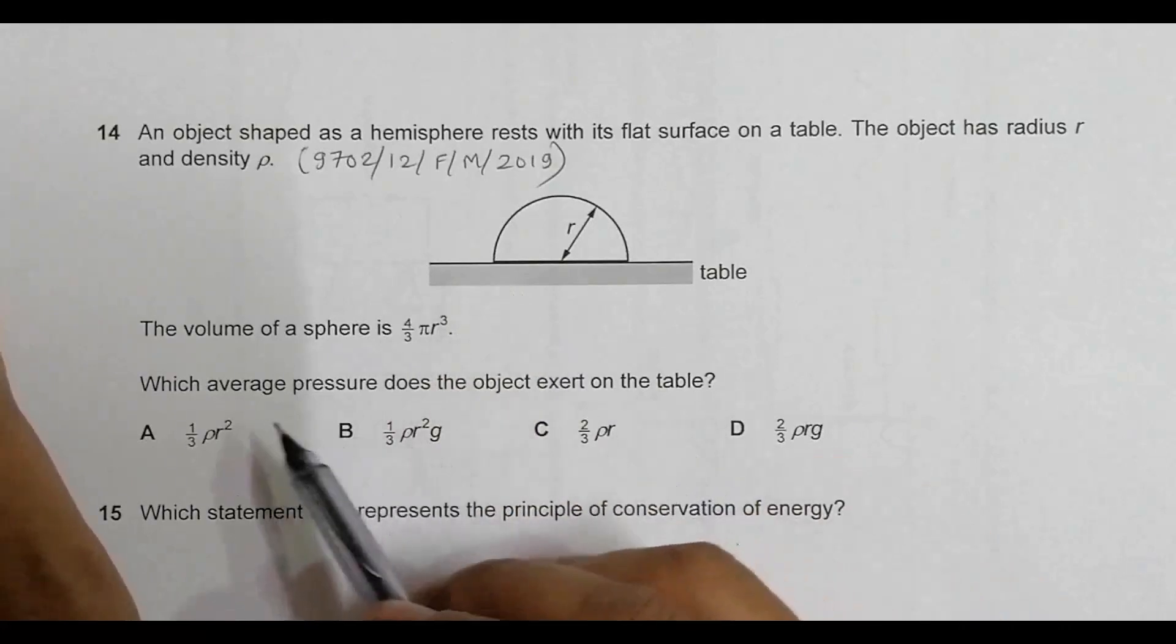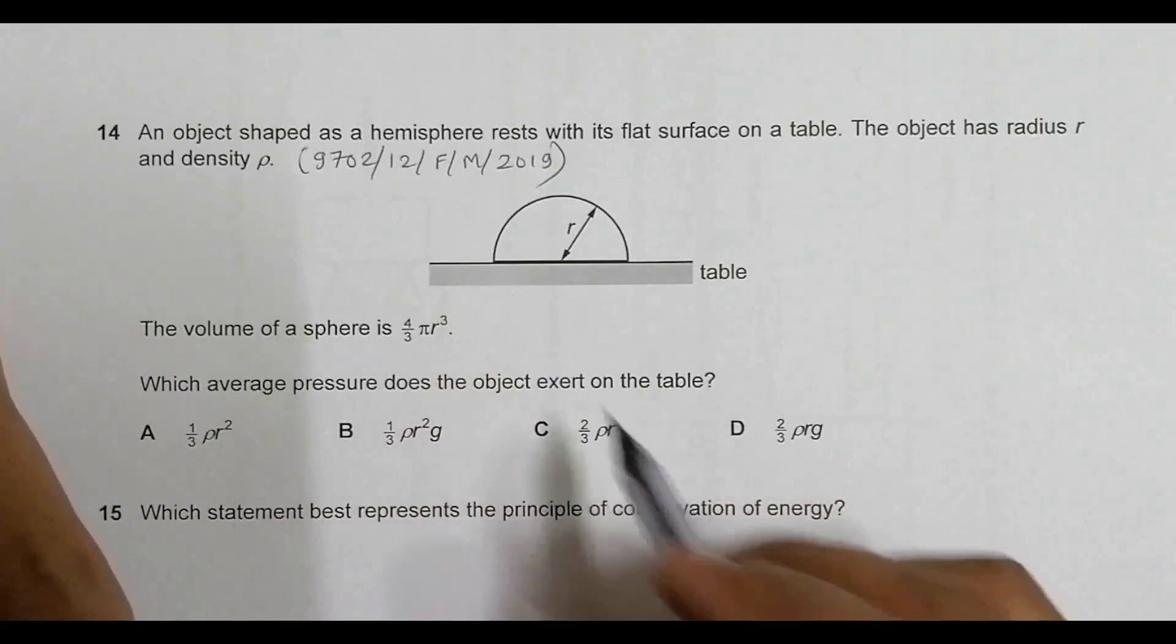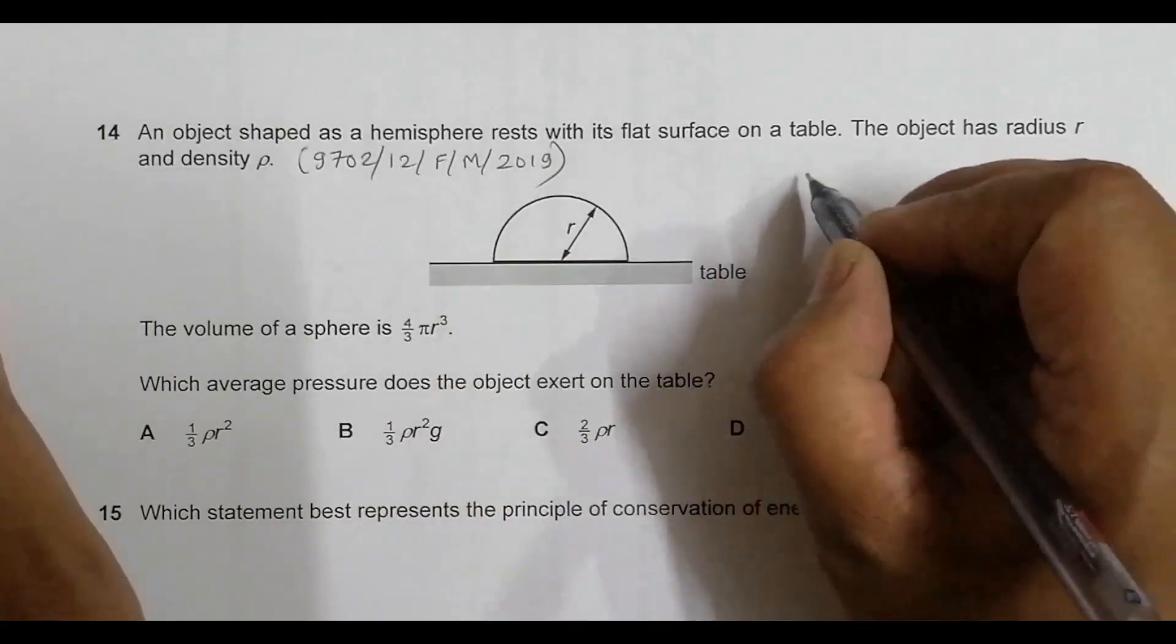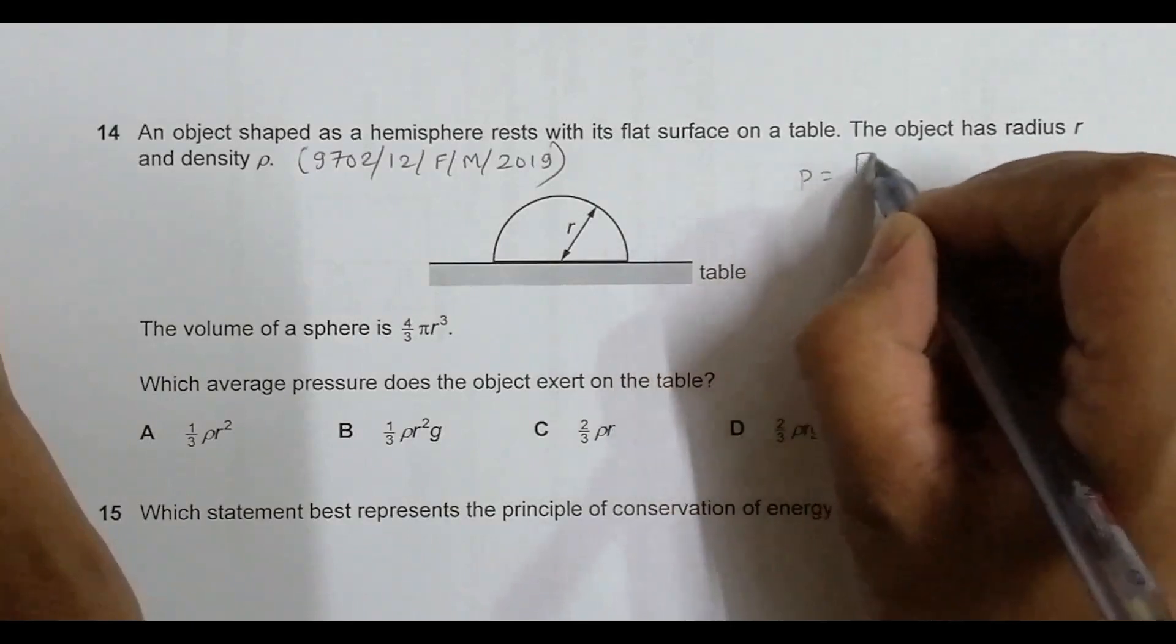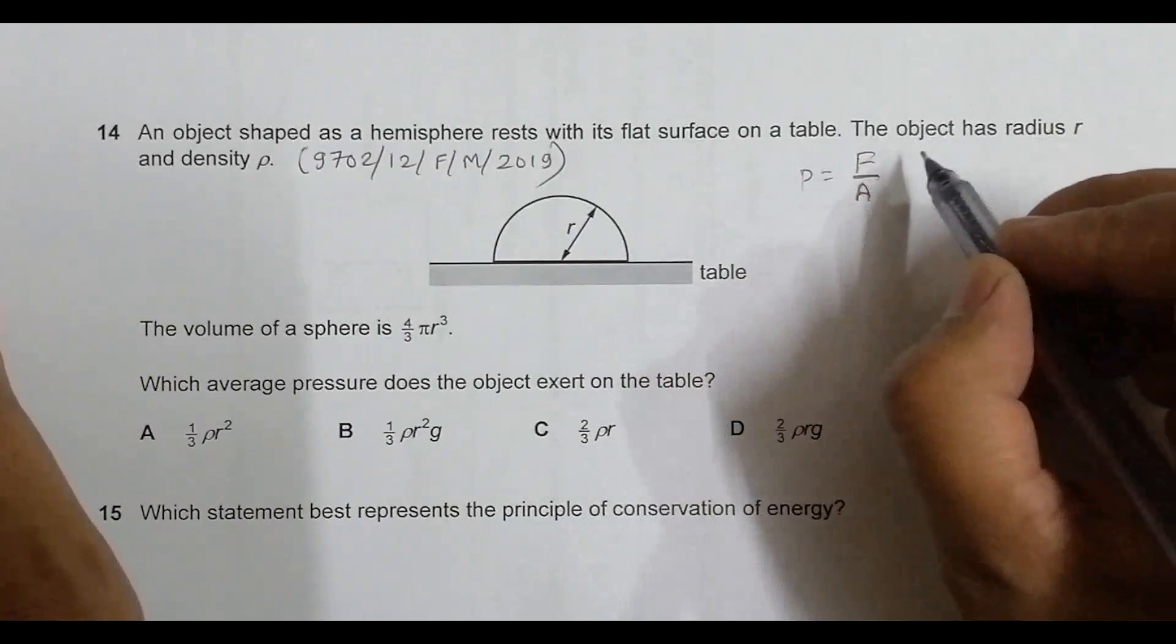The formula is given as guidance. Which average pressure does the object exert on the table? We have to find the pressure on the table. The formula for pressure is equal to force by area.